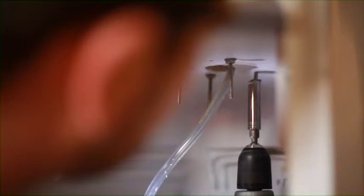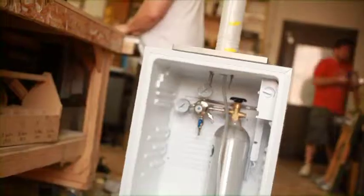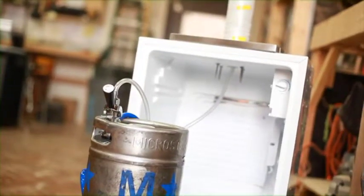Then continue to attach all the hoses or tubing to both the CO2 tank and the keg's tap. Don't forget to open the CO2 tank valve after all the lines are attached and in place.